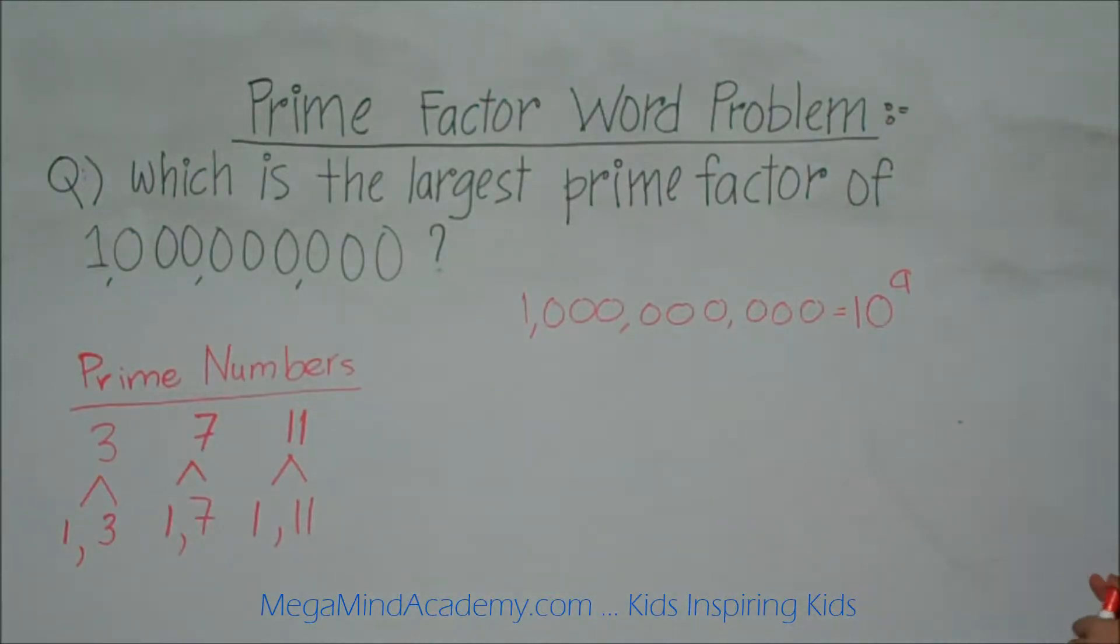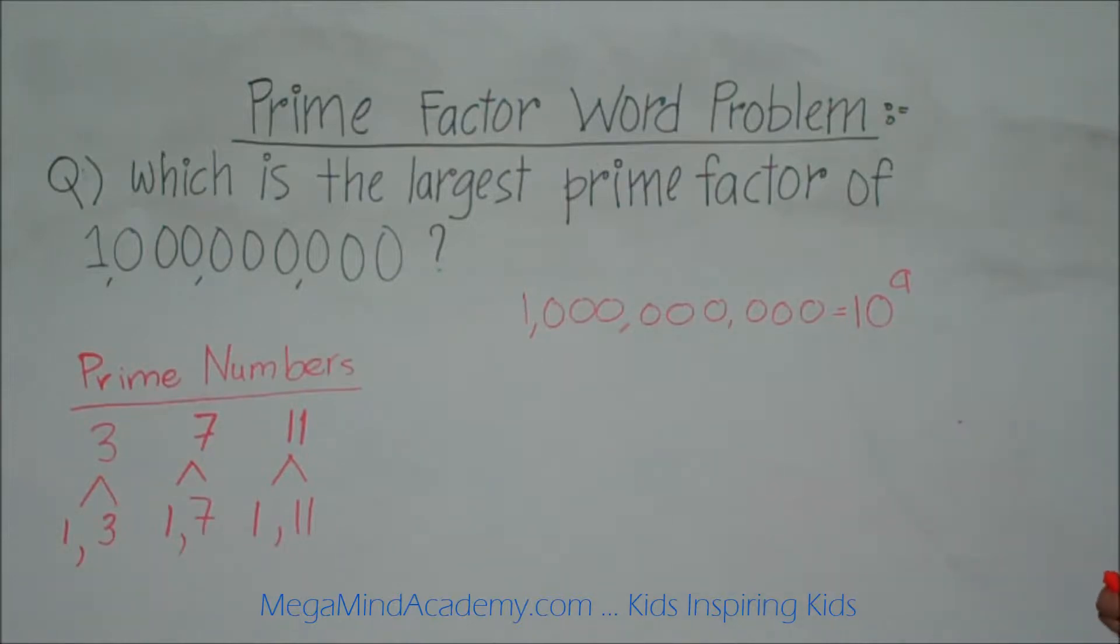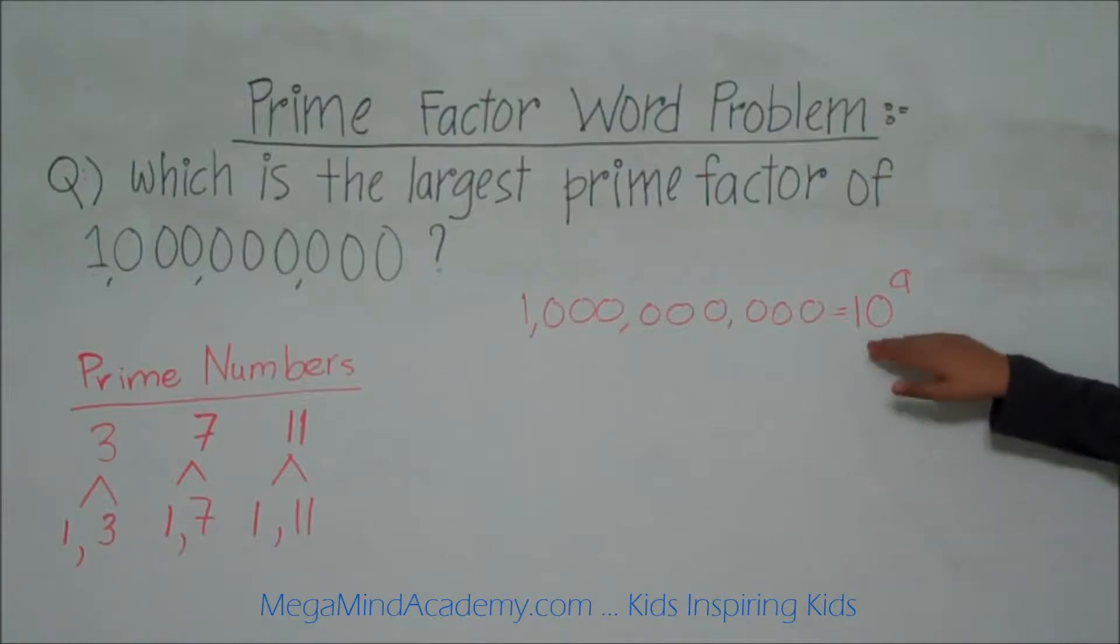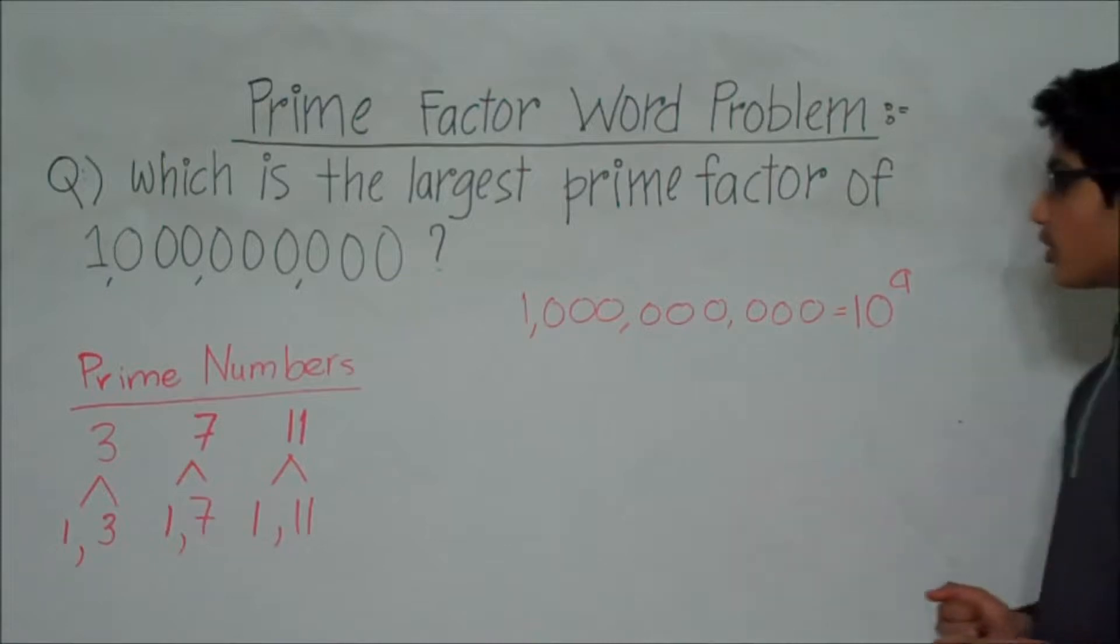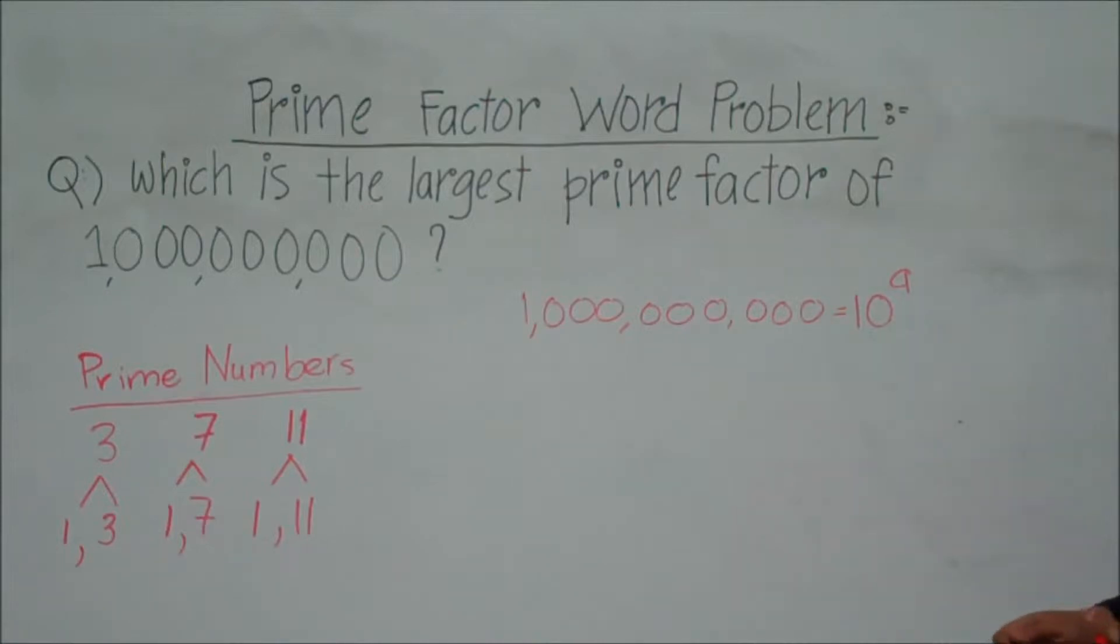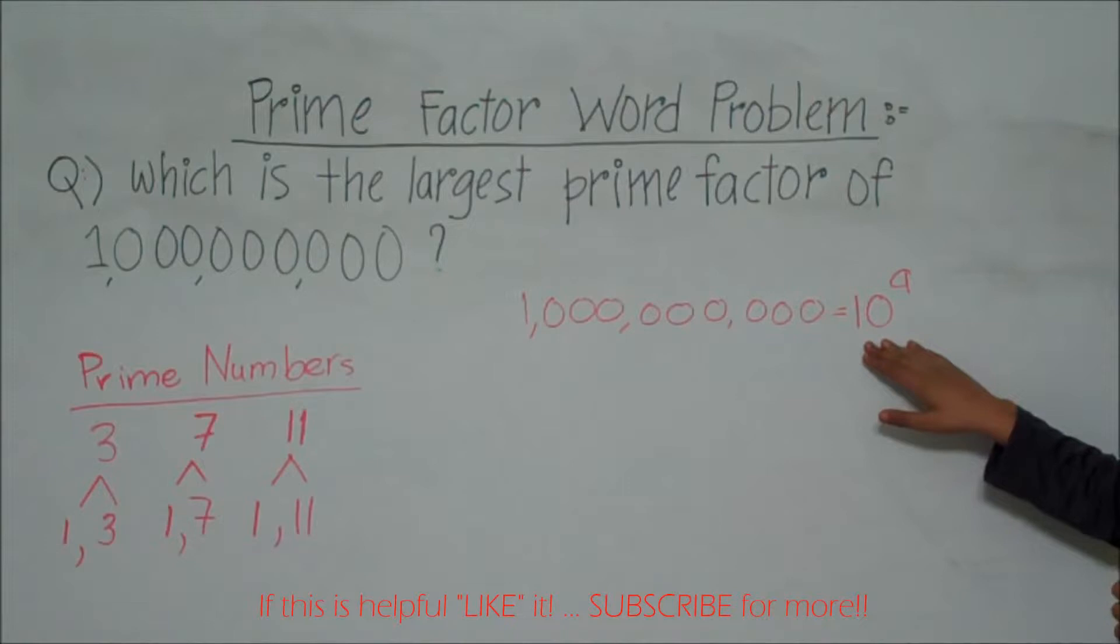We know that any factor of 1 billion that is greater than 10 is a multiple of 10, which means that it has an extra factor of 10, making it not a prime number. So the largest prime factor of 1 billion is less than 10 and is also a factor of 10.